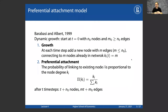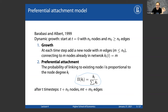The idea is that the new node connects preferably to nodes with higher degree — the higher the node degree, the more likely the new incoming node will connect to it. The logic is 'rich gets richer': when you join a social network, are you more likely to connect to someone with no friends or someone with lots of friends? The probability of connecting to a node of degree kᵢ is proportional to that node degree, normalized by the sum of all node degrees to make it a probability. This is the key formula for the model.